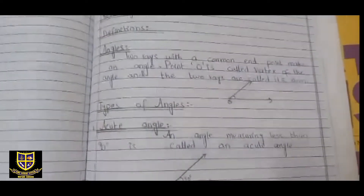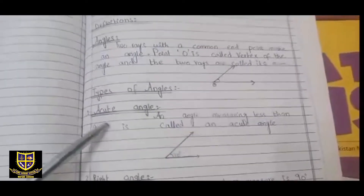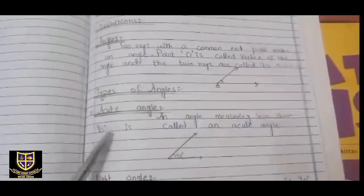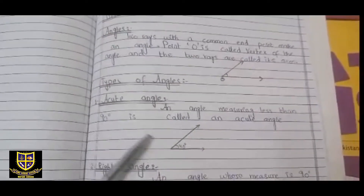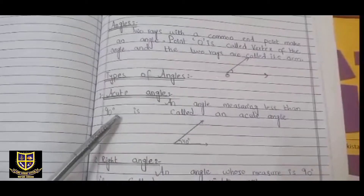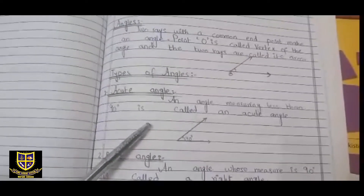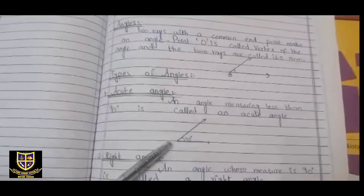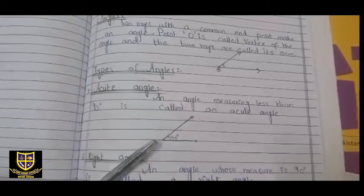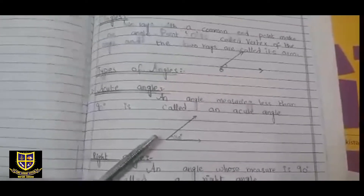Types of angles. The first type is the acute angle. An angle measuring less than 90 degrees is called an acute angle. These smaller angles whose measure is under 90 degrees are all acute angles.